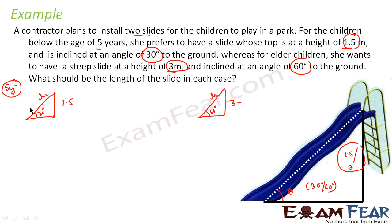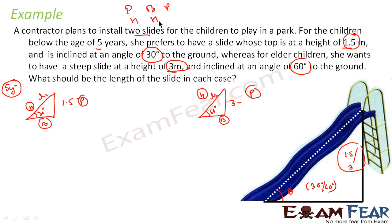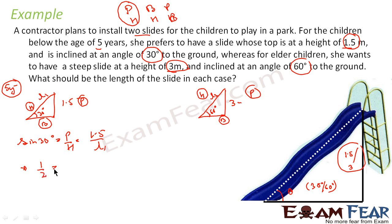In the triangle, theta is the angle of reference. The hypotenuse is L1, the perpendicular is the height, and the base is at the bottom. We need a relation between H (hypotenuse) and P (perpendicular), so using our formula — sin theta — in case one: sin 30° = P/H = 1.5/L1. Since sin 30° = 1/2, we get L1 = 1.5 × 2 = 3 meters.